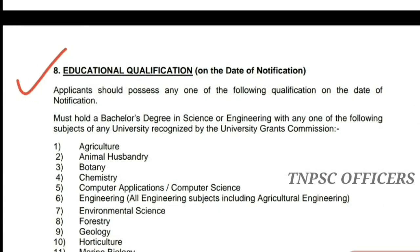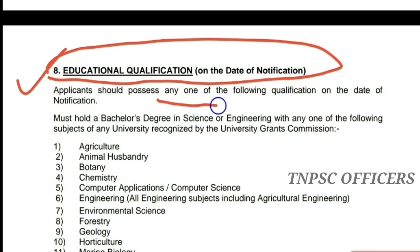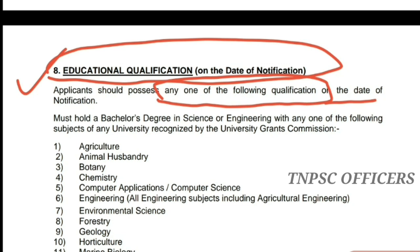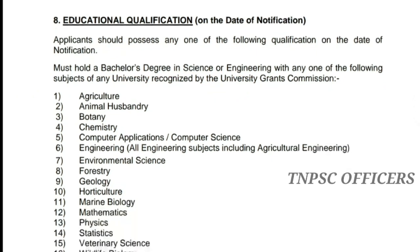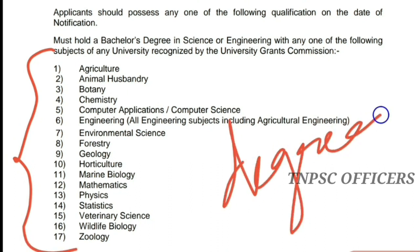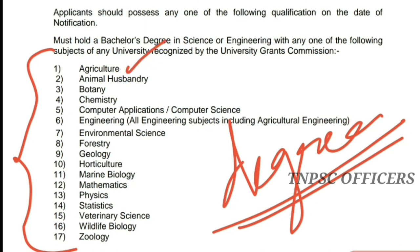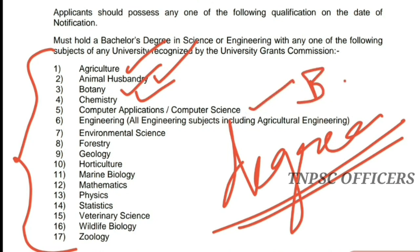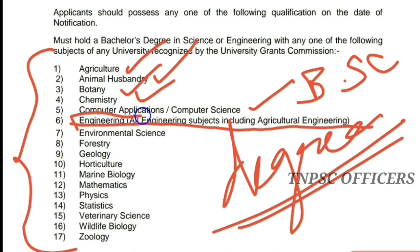Educational Qualification: Applicants should possess any one of the following qualifications. On the date of notification, you must hold a Bachelor's degree in Science or Engineering, with any one of the following subjects recognized by the University Grants Commission. This includes B.Sc. Computer Application, Computer Science, and all engineering subjects including Agricultural Engineering.